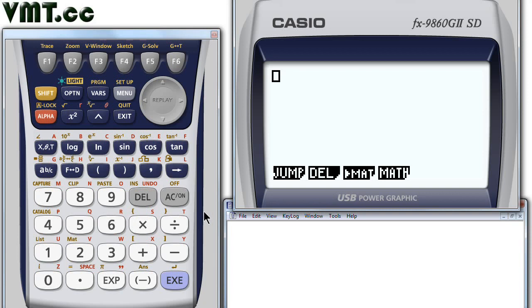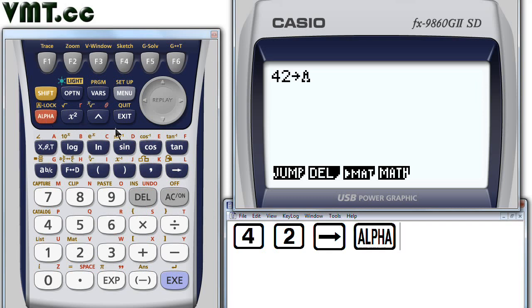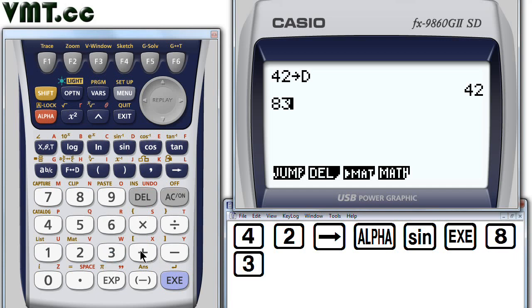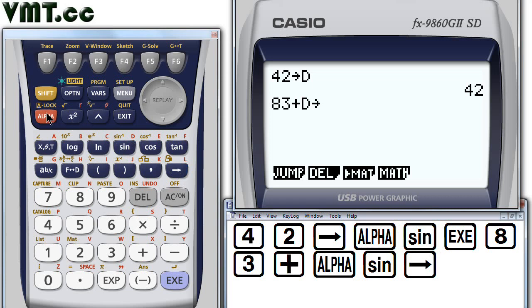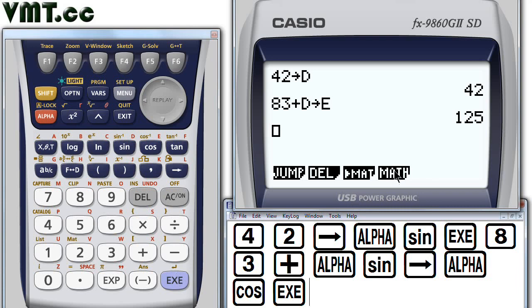Input the value 42 store alpha d execute. Let's add 83 to this value. 83 plus alpha d. And let's go ahead and store this sum into variable e. Press the store button then alpha e execute. The result is 125.